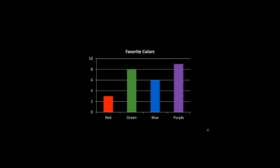The first thing we want to do when answering questions about a bar graph is figure out what the scale is. The scale is over here on this graph — you can see it counts by twos: two, four, six, eight, ten. So the scale on this graph is two. That's what we're counting by.